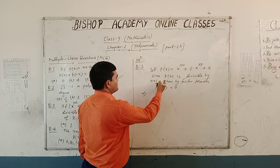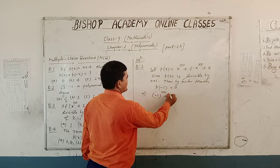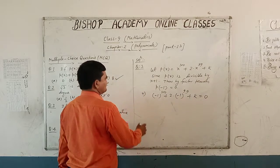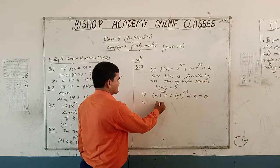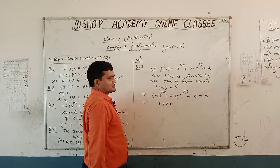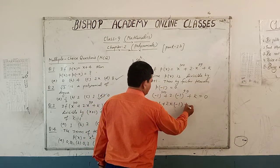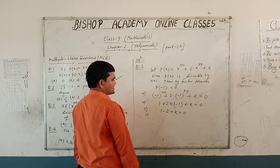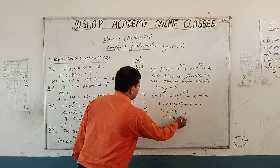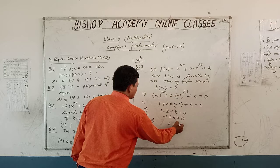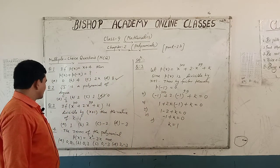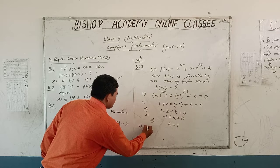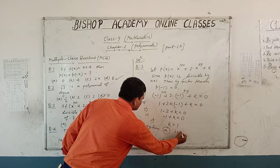By the factor theorem, P(-1) is equal to 0. This implies that (-1) raised to the power 100 plus 2 into (-1) raised to the power 99 plus k equals 0. That is 1 minus 2 plus k equals 0, which means minus 1 plus k equals 0. This implies that k is equal to 1. Here we see option A is correct.